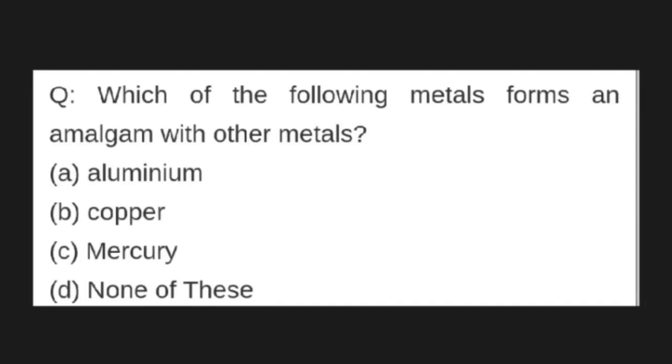Which of the following metals forms an amalgam with other metals? Options are A: aluminium, B: copper, C: mercury, D: none of these. Correct answer is C: mercury.